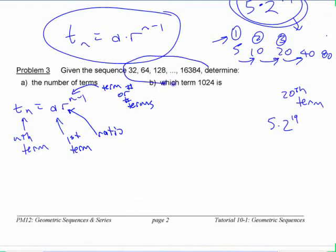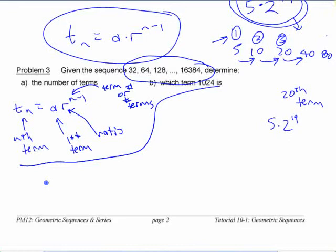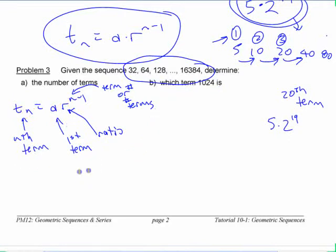So if you're given a sequence but you're not told what's in the middle, a good strategy is to make a list of what you know and then find the one you don't know. Just like any other formula — if you have four different things, you can substitute in three of them and find the missing one.